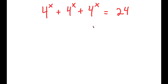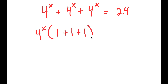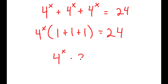To solve this, I'm going to first start by factoring out 4 to the power of x from the left-hand side. So now I get 4 to the power of x times 1 plus 1 plus 1 is equal to 24. Now 1 plus 1 plus 1 is 3, so I get 4 to the power of x times 3 is equal to 24.